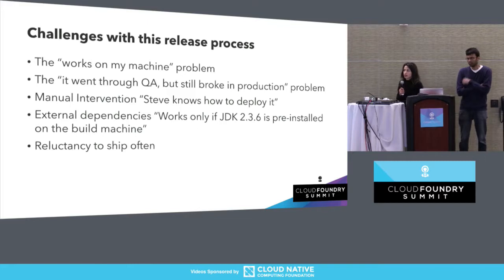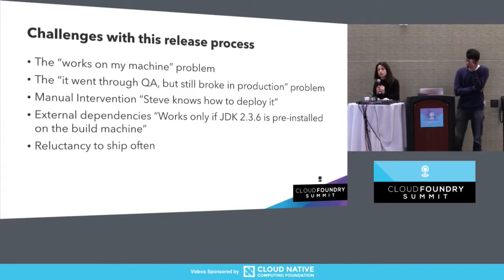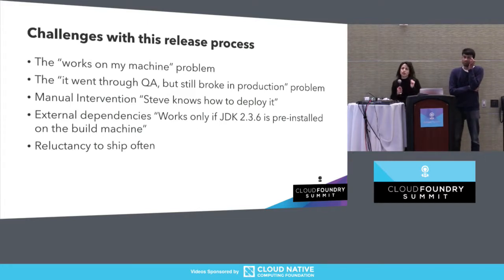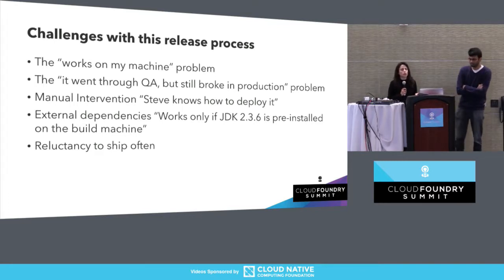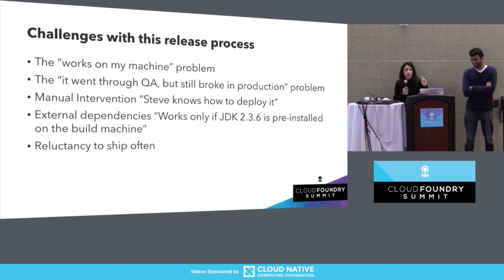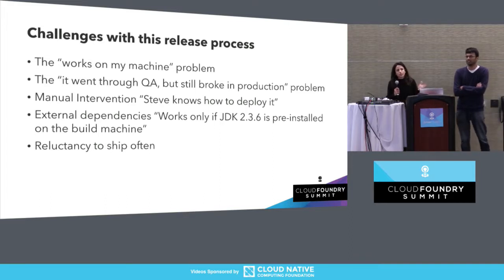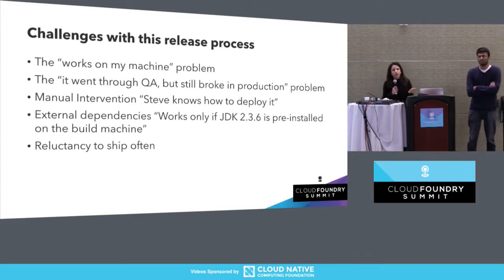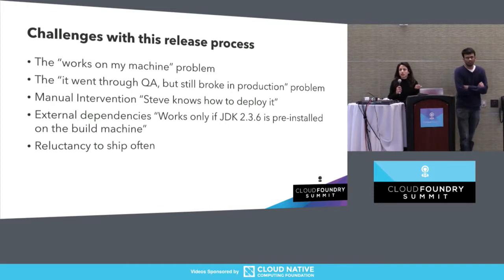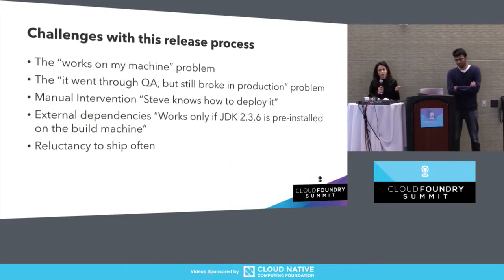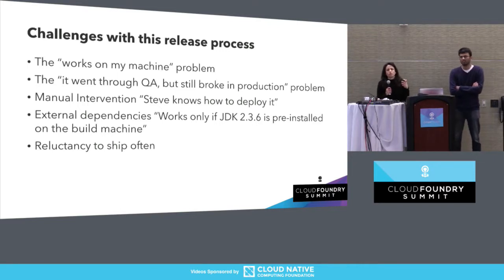Even for this relatively straightforward release process for a relatively simple software system, we can start spotting some challenges. One common problem is the works-on-my-machine problem, also known as it went through QA but still broke in production. The main underlying issue is that it's really tricky, if you don't have the right tooling, to consistently create deployment systems that look exactly the same as each other.